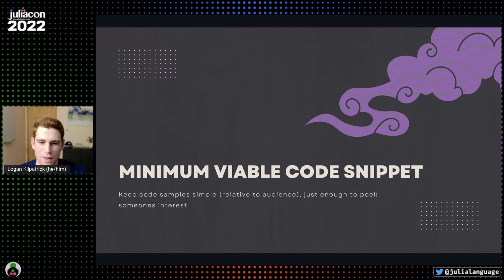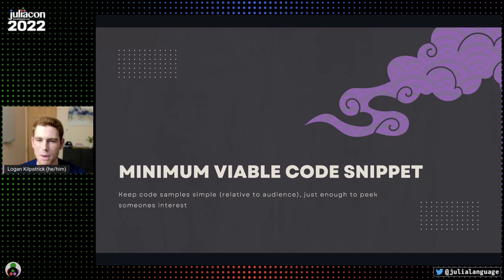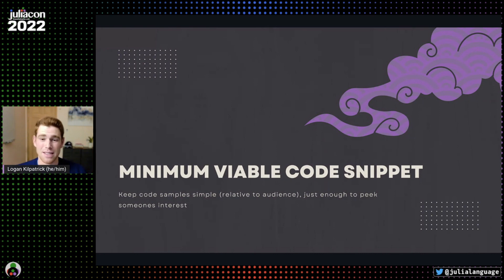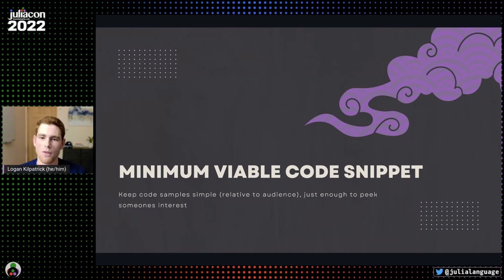Something I really noticed in an example — I think it was Christopher and a few other folks giving a talk at a German AI conference — they did a really good job of providing minimum viable code snippets, which I really appreciated. I hate when presentations have an entire page of code that's hard to dissect, especially if you're seeing Julia code for the first time. Leading with the principle of the minimum viable code snippet — just enough to pique someone's interest but not enough to overwhelm them — is a really great principle to have.